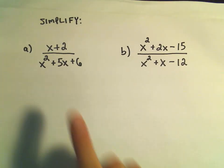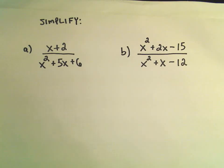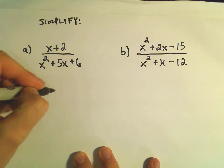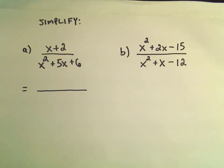So in the first one we have x plus 2 over x squared plus 5x plus 6. All I'm going to try to do is just factor the denominator, the quadratic.